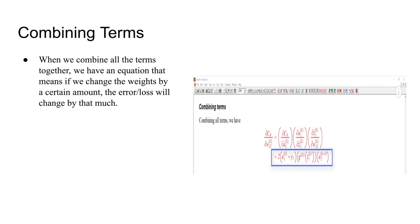Now we have to combine every term, because that's how we get our derivative of the loss function in the end. When combining all three terms together, we have an equation that means: if we change the weights by a certain amount, the loss will change by the value given by that equation. As shown in the picture, the equation in the blue box is how much the error will change by changing the weights by a certain amount.